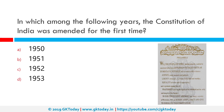In which among the following years was the Constitution of India amended for the first time? The correct answer is 1951. The formal title of the amendment is the Constitution First Amendment Act 1951. It was moved by then Prime Minister Jawaharlal Nehru on 10th May 1951 and enacted by Parliament on 18th June 1951.